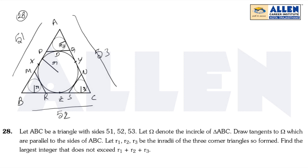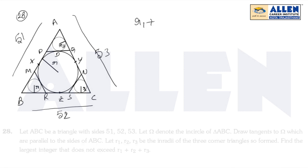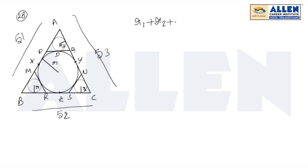Let sigma denote the incircle of triangle ABC. Draw tangents to this incircle which are parallel to the given sides of the triangle ABC. Let small R1, R2, R3 be the inradii of three corner circles so formed, then find the largest integer which does not exceed R1 plus R2 plus R3.